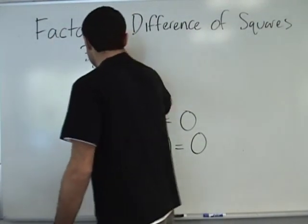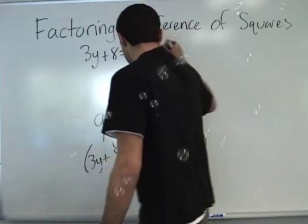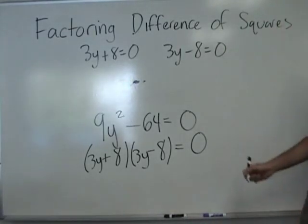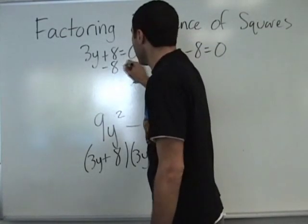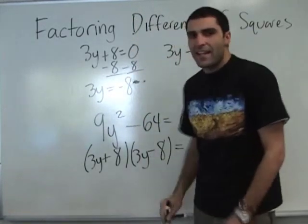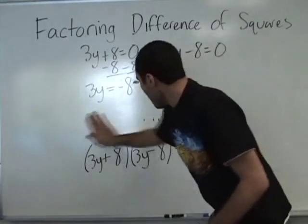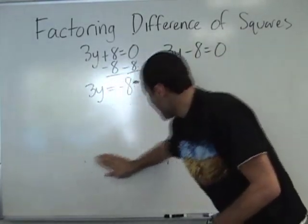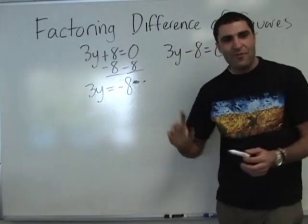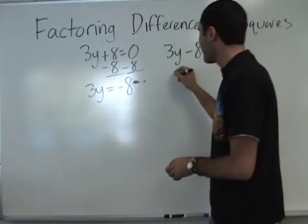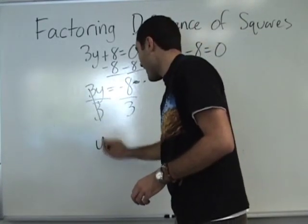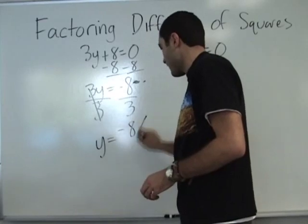So that's 3Y plus 8 equals 0, and 3Y minus 8 equals 0, and we solve. Minus 8, minus 8. 3Y equals negative 8. Divide by 3. Y equals negative 8 over 3.